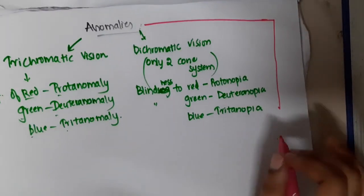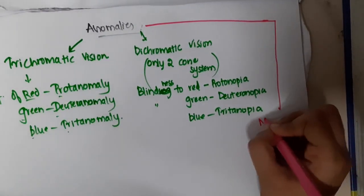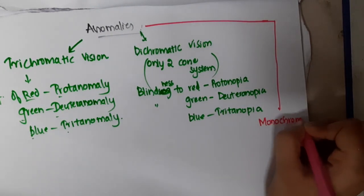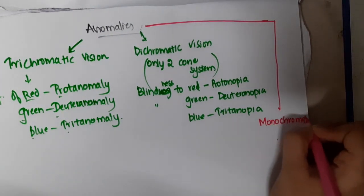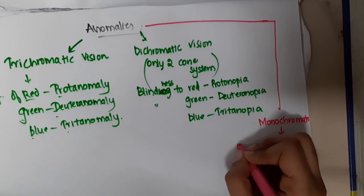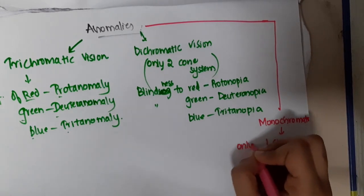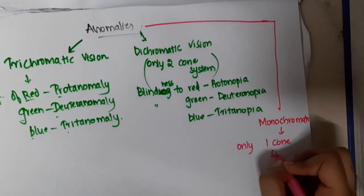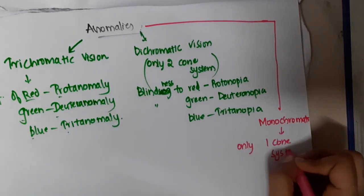Next we have monochromatic vision, where the patient has only one cone system present.